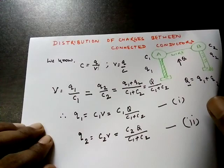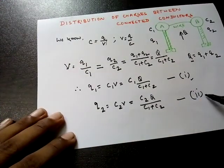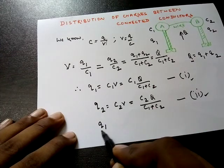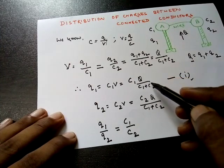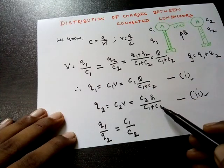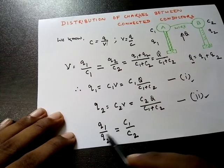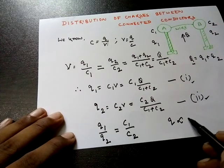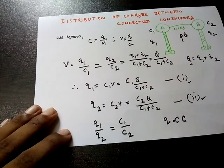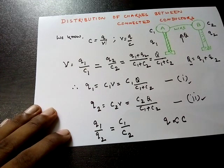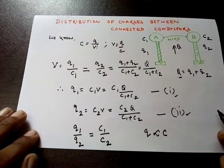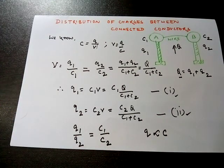Now, dividing equation 1 by equation 2, we get Q1 / Q2 = C1 / C2, because the common terms Q and (C1 + C2) cancel out. So we find that charge is proportional to capacitance — if the capacitance is high, the conductor will hold a larger charge; if the capacitance is low, it will hold less charge. Thank you for watching, and please share this video with your friends!